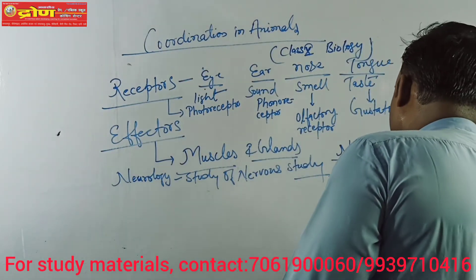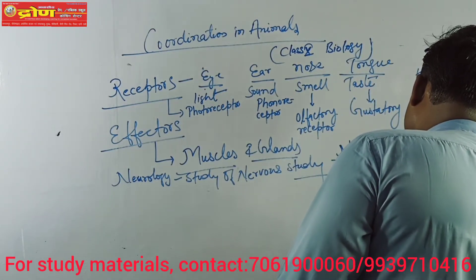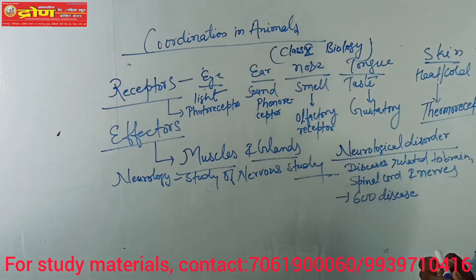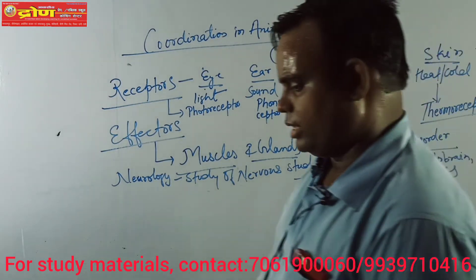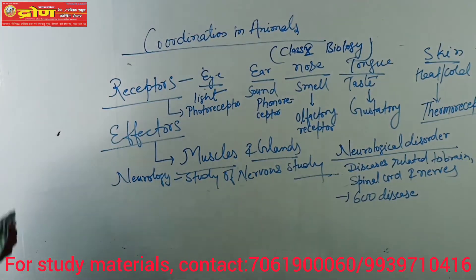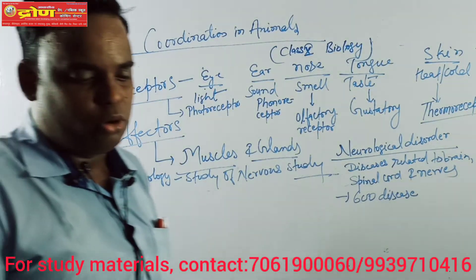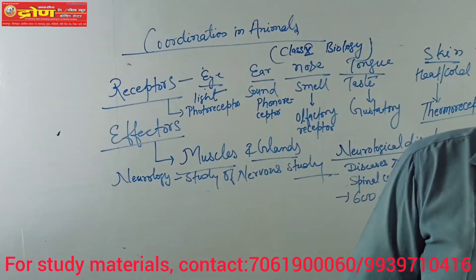There are problems with cerebral diseases, including neurological disorders. These include brain tumors, paralysis, and all conditions related to the brain. This is the problem domain of neurological disorders. We will now classify the nervous system.